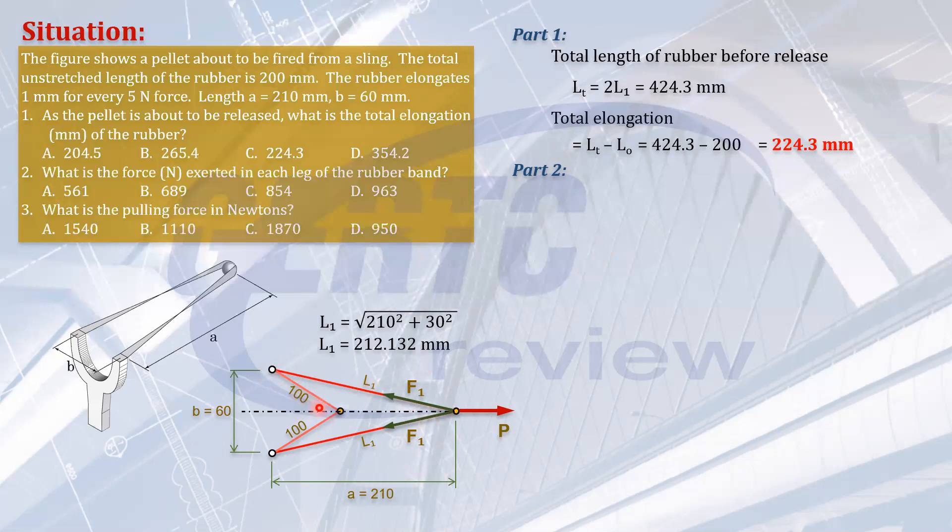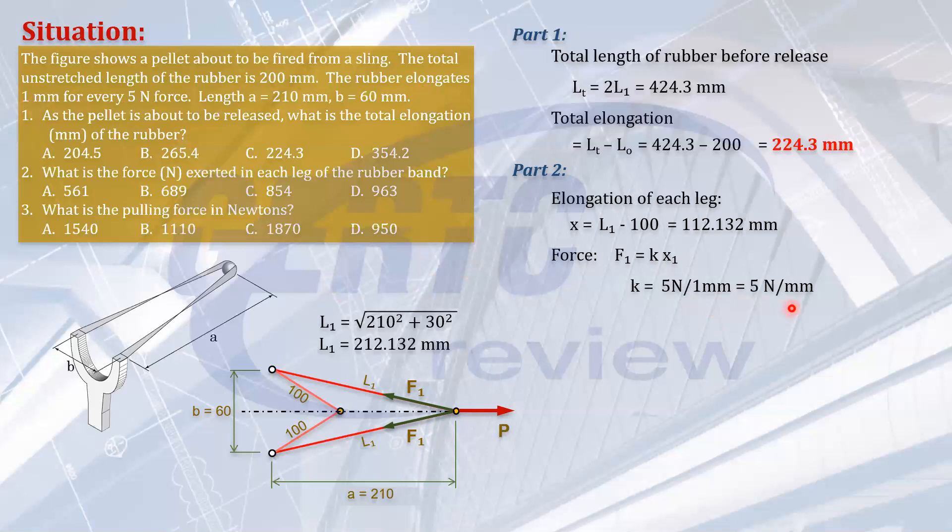The initial length of the leg is 100. The final length is 212. So that the elongation of each leg, let's call it X, that will be L1 minus 100 mm. So that's 112.132 millimeters. The force in a spring due to its elongation X is given by the formula K times X. Where K is the spring constant, the stiffness. In this case, it was stated here that the rubber elongates 1 mm for every 5 newton of force. So meaning your K is 5 newtons per mm.